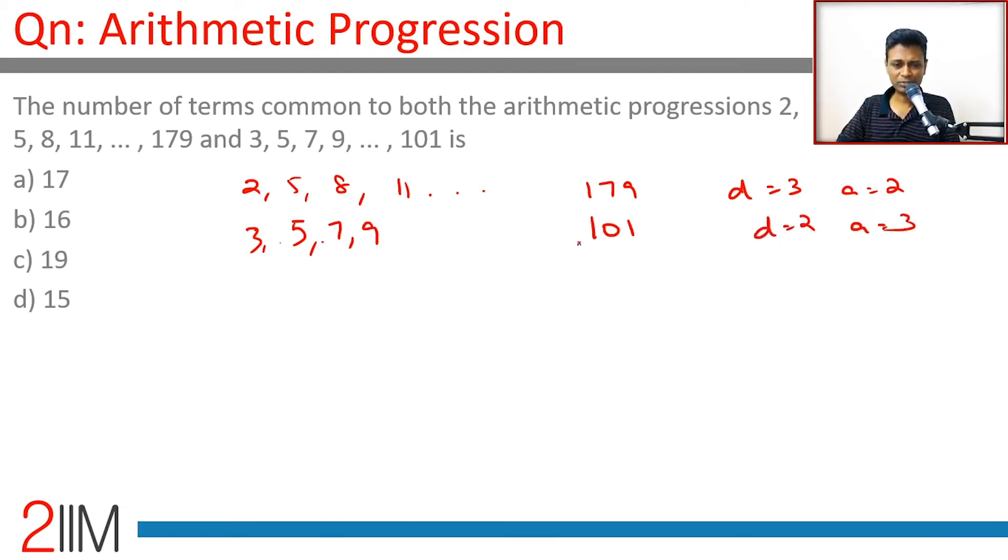The common difference is 2. The first common point is 5. We have got that this goes in steps of 3, this goes in steps of 2. The LCM of 2 and 3 is 6, so the sequence goes as: